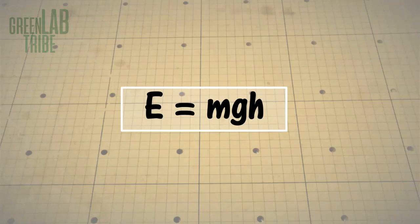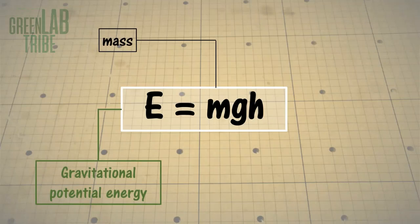The main restriction is space. If we take a look at the gravitational potential energy equation, we can see that it depends on mass, gravity, and height.